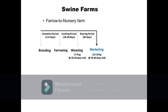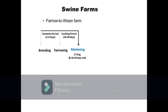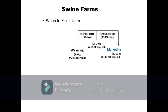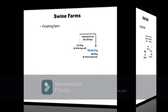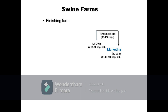Next is the farrow-to-nursery farm. This farm manages stages of production from breeding of sows or gilts until their offspring reach 15 to 20 kg live weight. Next is the nursery-to-finish farm, which is involved in purchasing 7 to 8 kg weaned pigs from farrow-to-wean farms and raising these pigs until they reach the desired market weight. Then there is the finishing farm that buys 15 to 20 kg pigs from farrow-to-nursery farms and raises these animals until they reach the desired market weight.